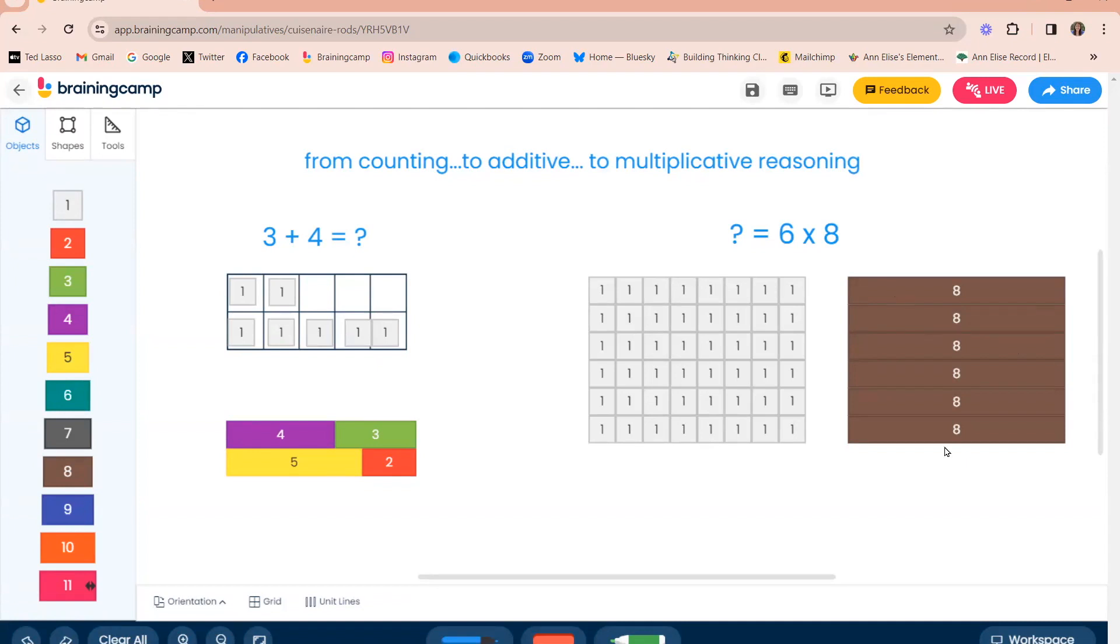As we move on to the multiplicative reasoning, we have a six by eight array. I built them here using the ones cubes as lots of students will do when they use actual unifix cubes or they may draw an array using x's. How do they figure out how many that is in all? Are they counting? Are they counting one by one? Are they skip counting?